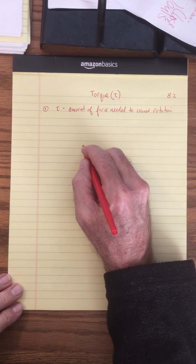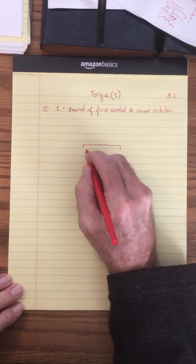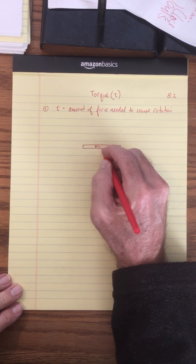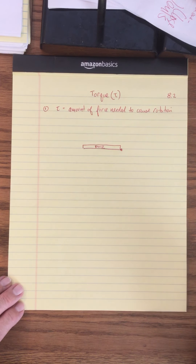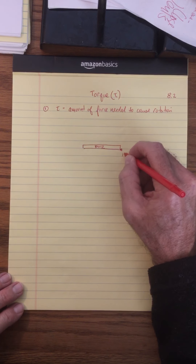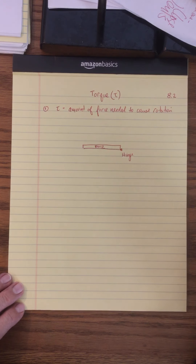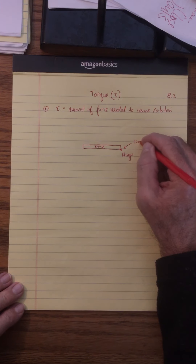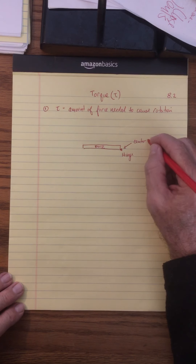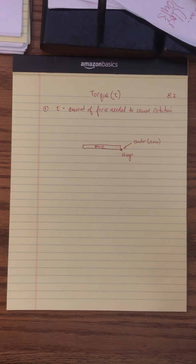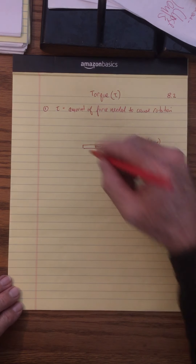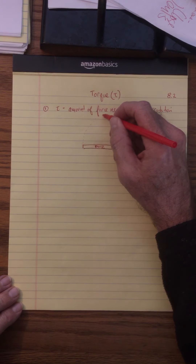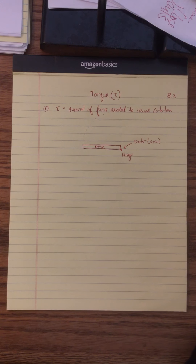If you remember, we had Eli go up to the door. Let me draw a little door here. The door is attached to the wall — this is a top view looking at the door. Here is the hinge that the door is attached to. This is the center, also called the axis. Just like the earth has an axis and rotation, the door has a center or axis. When we open the door, it swings in an arc — so we're still talking about circular motion.